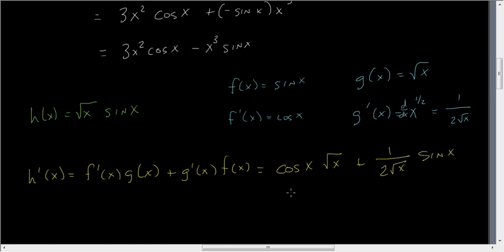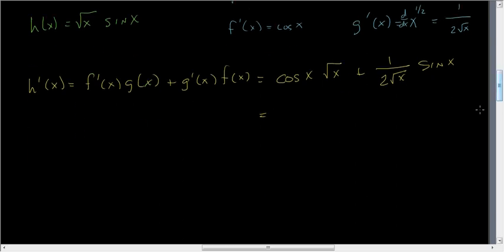And so if we just kind of work our magic here, we're going to clean this up a little bit. So we have root x cosine of x, plus sine can go up top here. And so we just have sine x over 2 root x. If you want it, I suppose you could get a common denominator and have 2x cosine x plus sine x all over 2 root x, but I don't see any particular need for it.